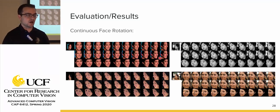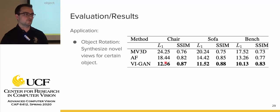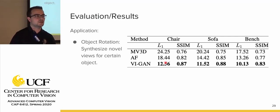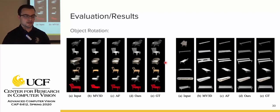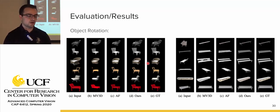The last application is object rotation — synthetically creating a novel view of an object using the ShapeNet dataset. They tested three categories: chair, sofa, and bench, comparing against MV3D and Appearance Flow (AF) models. VIGAN outperformed both in object rotation. The images show that their model captures high-level features such as chair legs that the other models are unable to render.